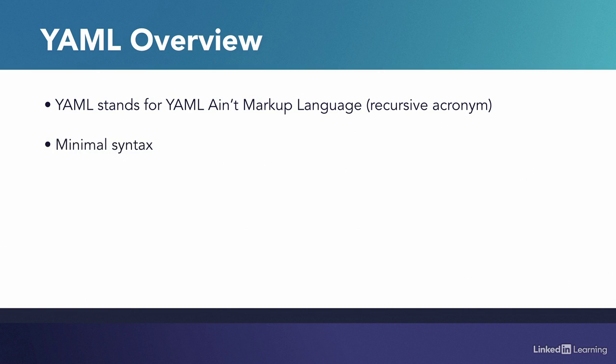Compared to XML and JSON, YAML only has a minimum syntax with more emphasis on human readability. Because of its emphasis on readability, it is often used in declarative automation tools such as Ansible. YAML uses indentation to indicate nesting. This is perhaps the biggest difference between YAML and other data formats that we have seen so far.